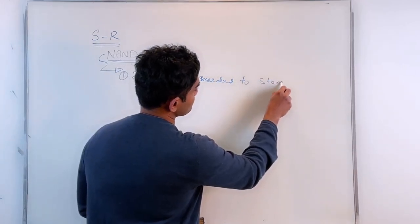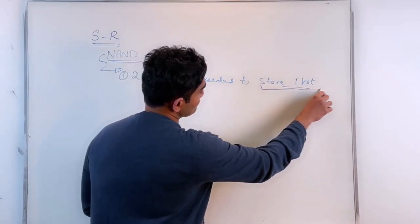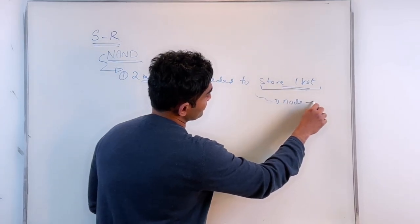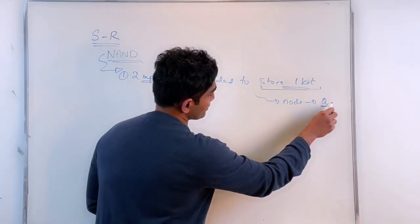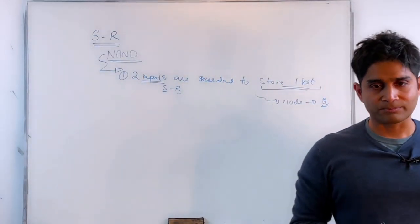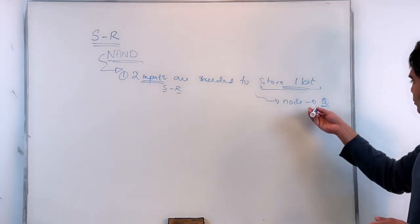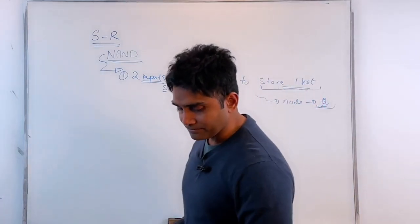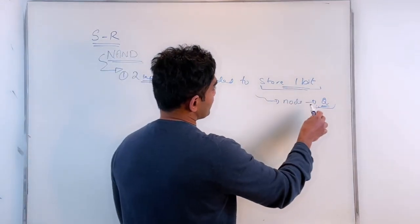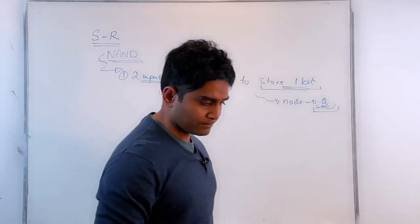Where am I storing that one bit? I can think about the node labeled Q in the diagram as the storage location. We have two outputs, Q and Q-prime, and the node Q is where I'm actually storing the information. My S and R inputs are the source of information, and Q is where that information is placed.